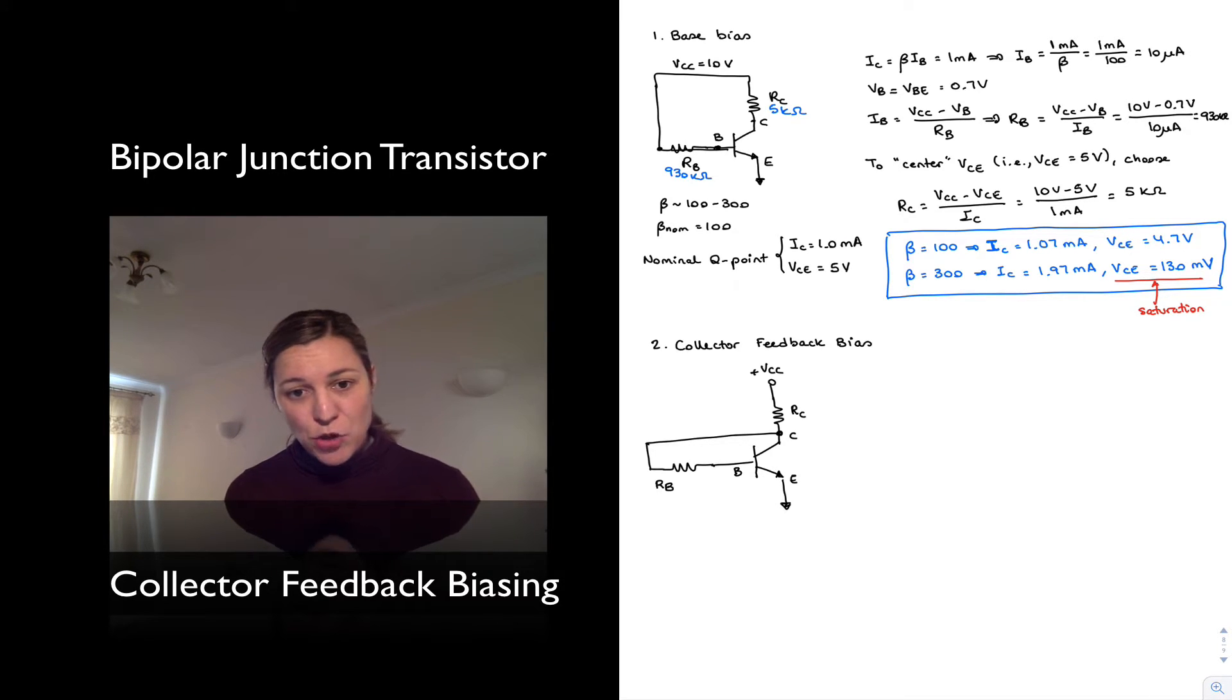And we can already see that this is going to provide a little bit of beta stability with respect to the base biasing configuration, because again, there is that relationship of IC equals beta times IB. And in this case, since the current through that RC resistor is going to be approximately constant, we have that if we increase our IC current, then there's going to be less current going into IB. And so therefore, they're going to balance things out if our beta becomes larger than the nominal beta, if it's closer to 300 as opposed to 100. We're going to keep the same values of beta, so a nominal value of 100 and a range from 100 to 300. We're going to design our network for the nominal point and then see what happens at the extremes.